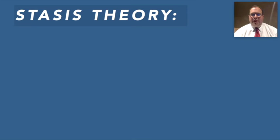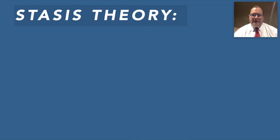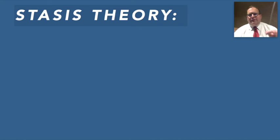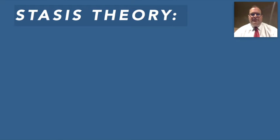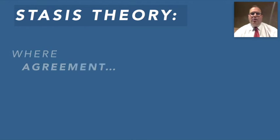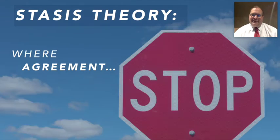Stasis theory is a rhetorical model that can help people figure out the best way to tackle an issue, to make an argument about where they stand on an issue. The key for stasis theory is that you have to understand the word stasis — stasis means at rest or stopped. Stasis theory deals with examining a situation and discovering and identifying where agreement stops.